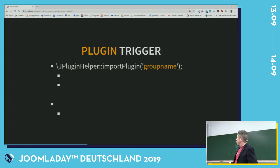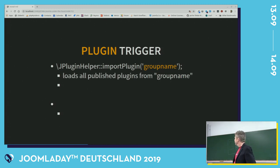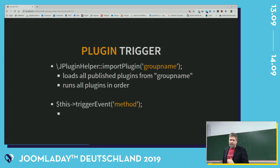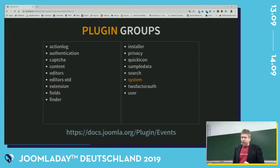Plugins listen to events, and they are triggered by 'JPluginHelper::importPlugin().' Here it would say 'system,' or if you have your own component you can create your own component name. They are triggered — when you trigger them you can trigger the event method, the methods that are defined in the plugin. These are the default plugins, but you can write your own plugins if you have your own components.